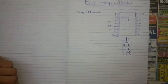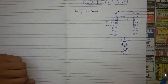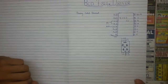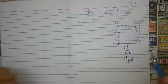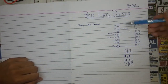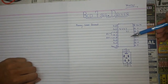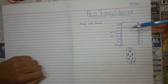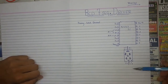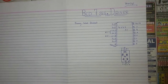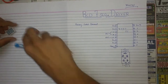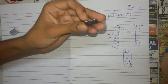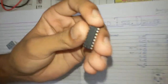Hello guys, today we are going to discuss about BCD seven segment driver. BCD stands for binary coded decimal. We are using a BCD IC which is the 7447 IC, which is used to drive the seven segment display. Now I'm listing the components used in this tutorial - this is the 7447 IC.